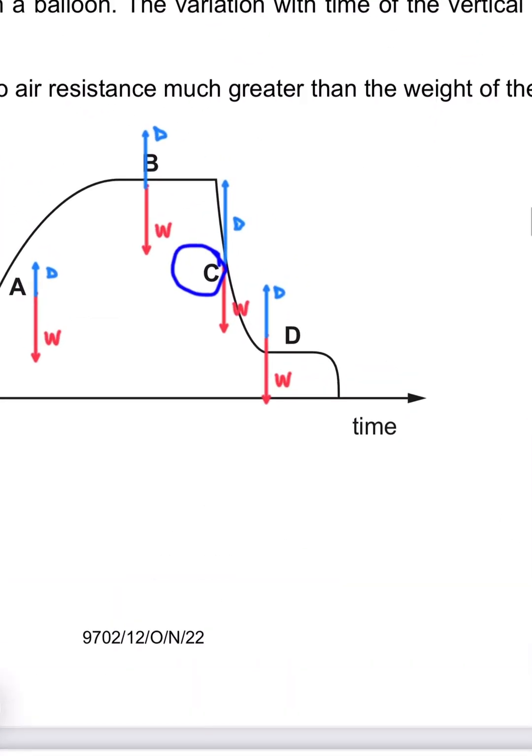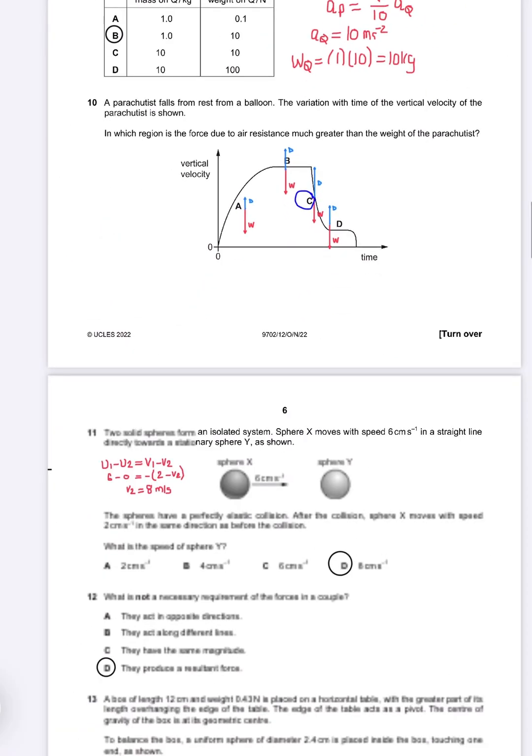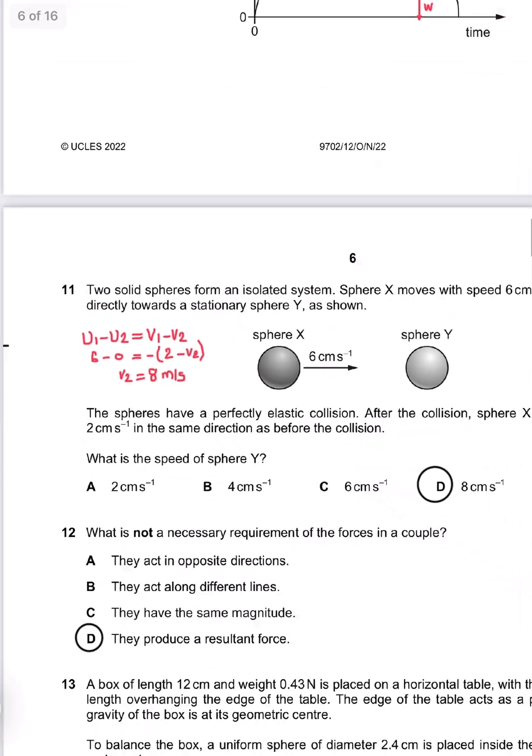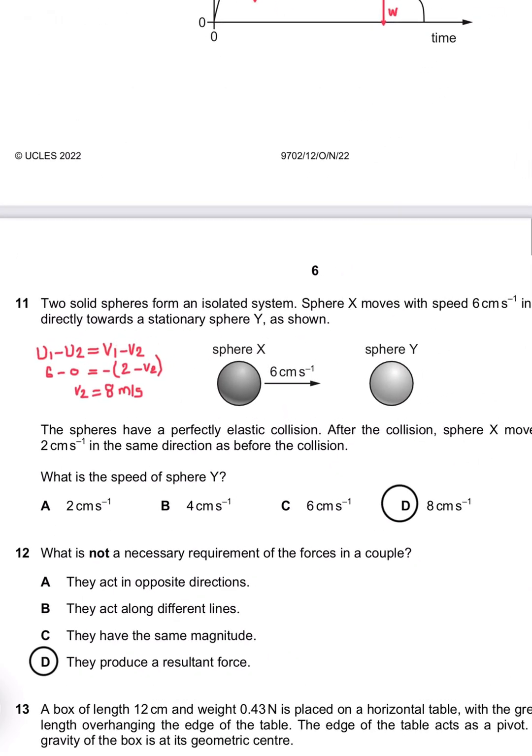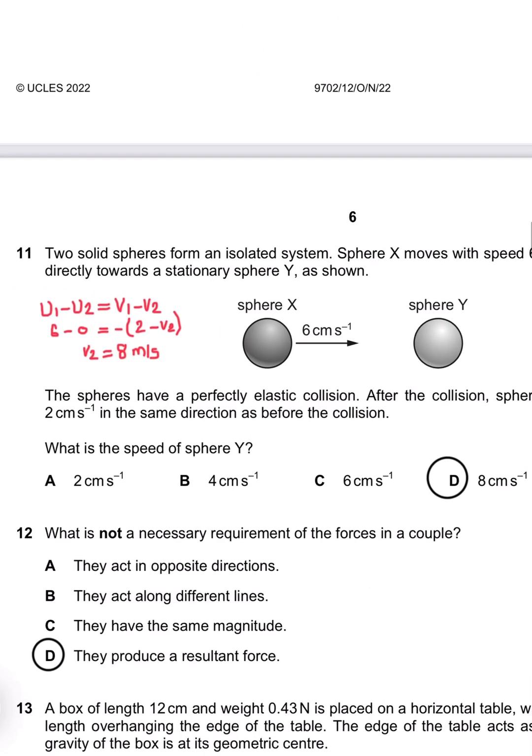Question 11: Two balls are moving. What is the speed of sphere? That's a repeated question. Relative speed of approach equals relative speed of separation, so u1 minus u2 equals minus v1 minus v2. So v2 is 8 meters per second. D is the appropriate answer.